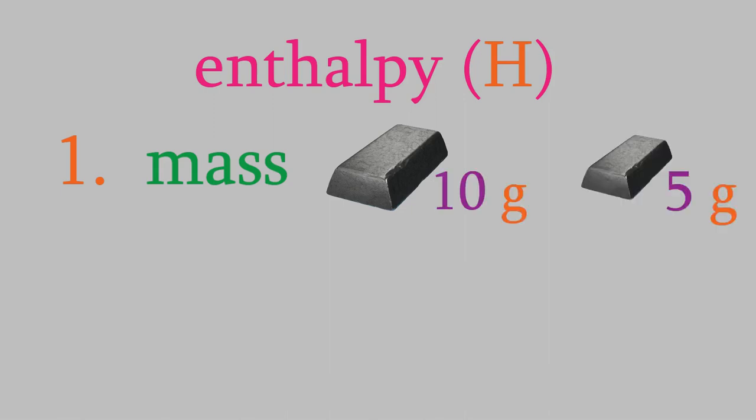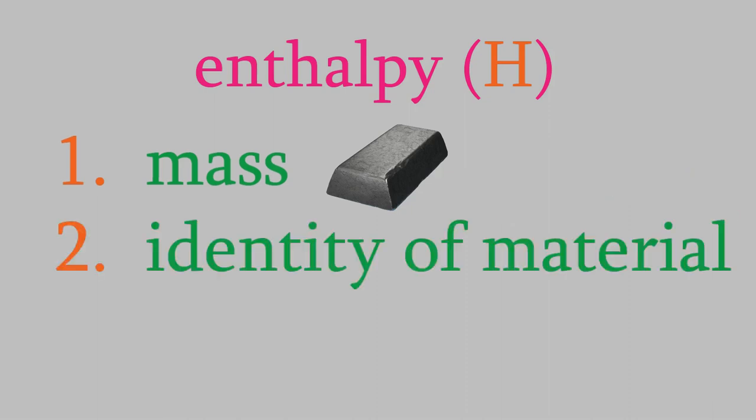So for instance, suppose you wanted to heat a block of metal. The first thing that matters is the mass. This makes sense. If you had a 10 gram piece of metal and a 5 gram piece of the same metal, it would take twice as much heat to warm up the 10 gram piece, because there's twice as much of the metal.